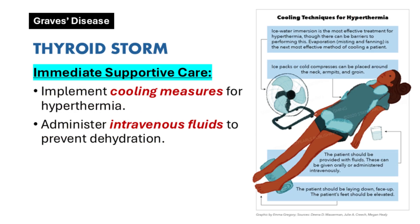Immediate Supportive Care for Thyroid Storm: Immediate supportive care is critical in managing thyroid storm. Cooling measures should be implemented to address hyperthermia, which can significantly impact patient stability. Intravenous fluids are essential to prevent dehydration and maintain adequate circulation. These initial interventions help stabilize the patient while further treatment is initiated.